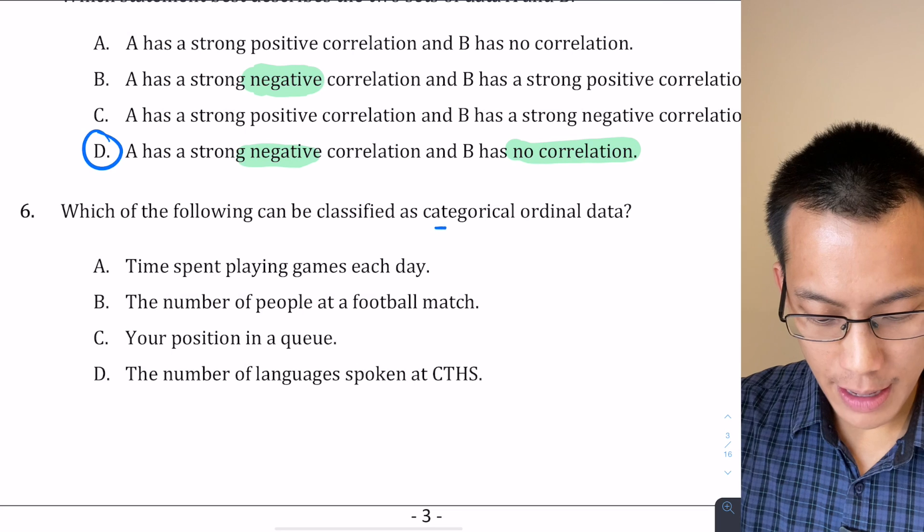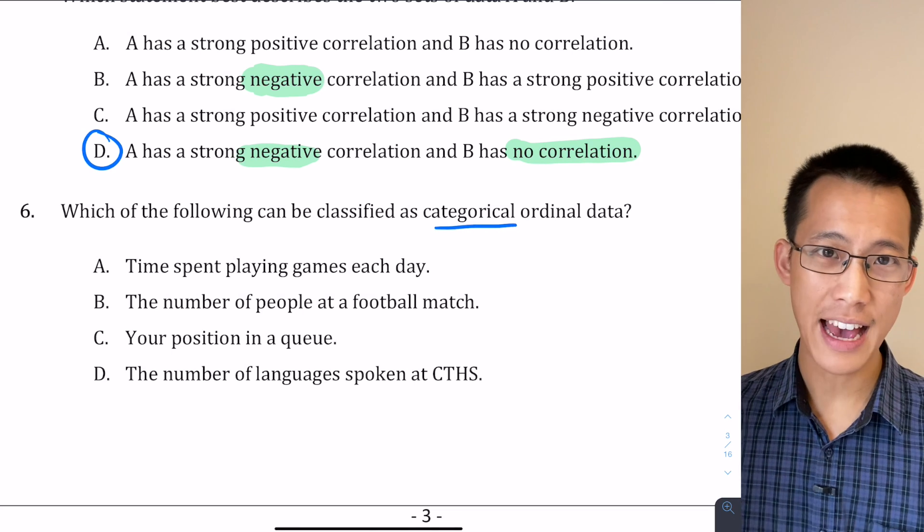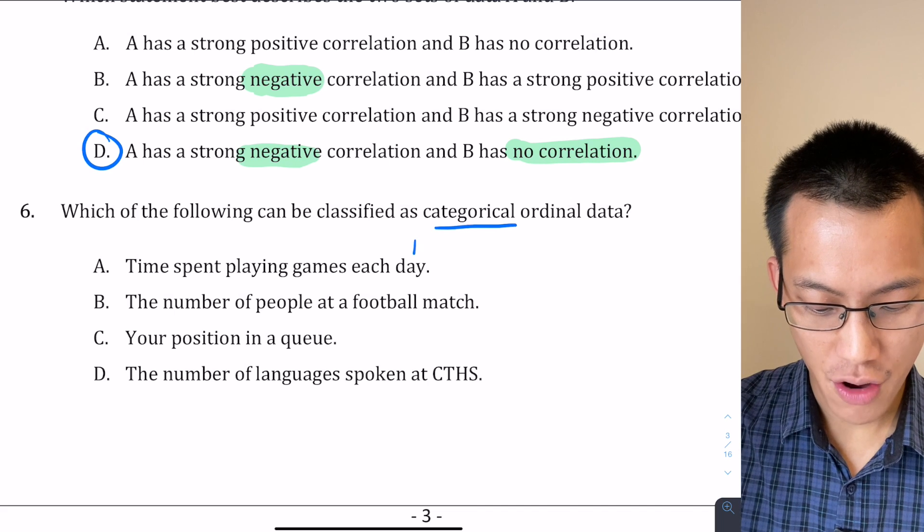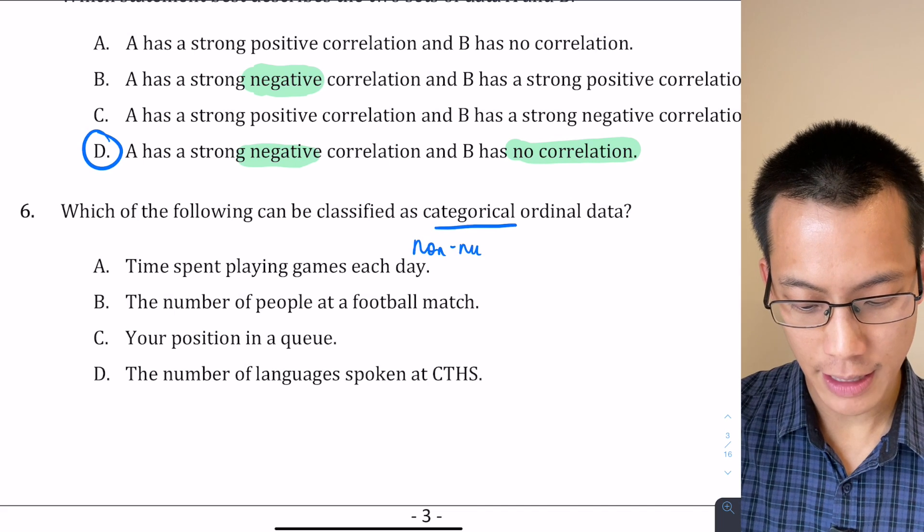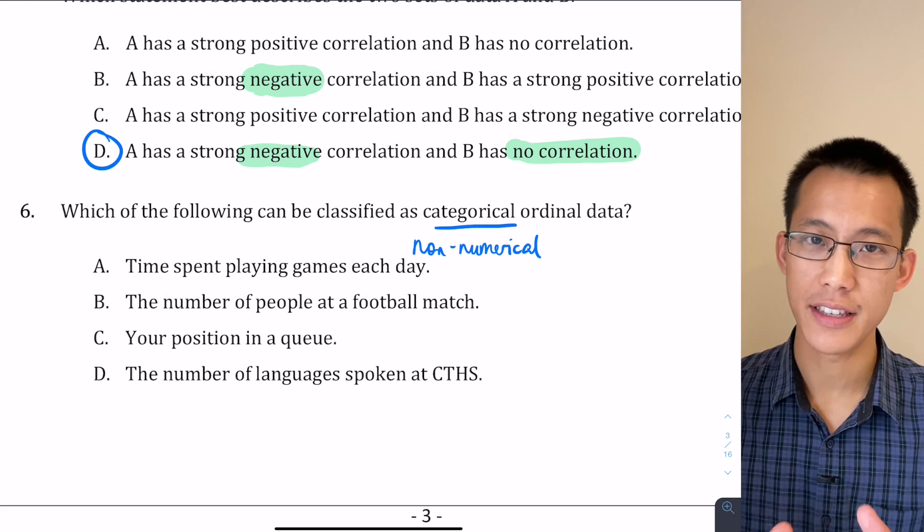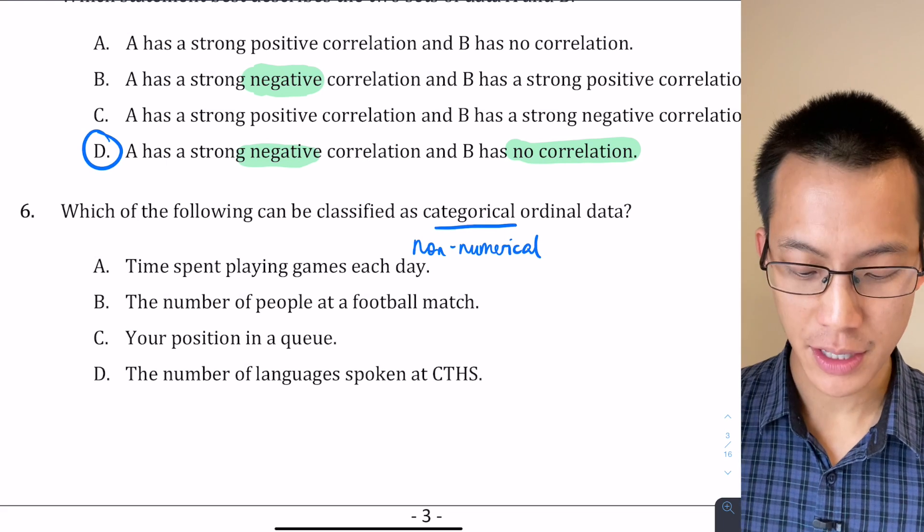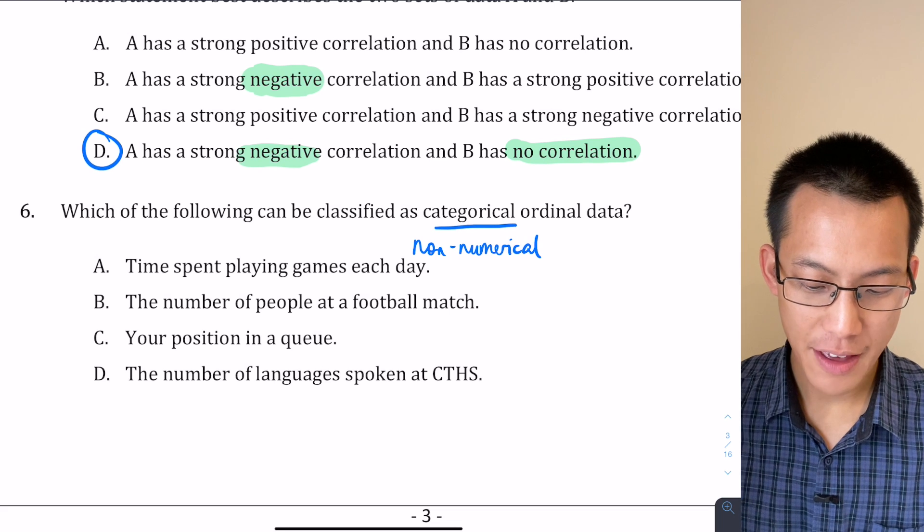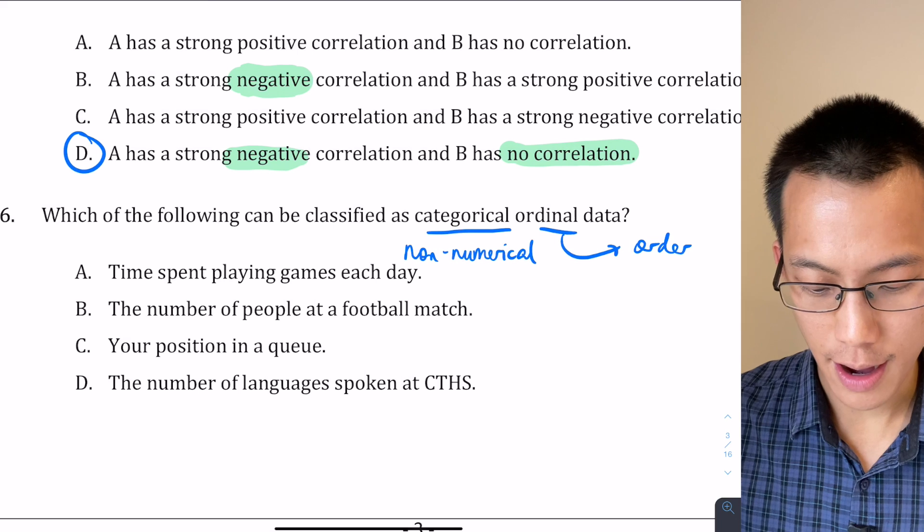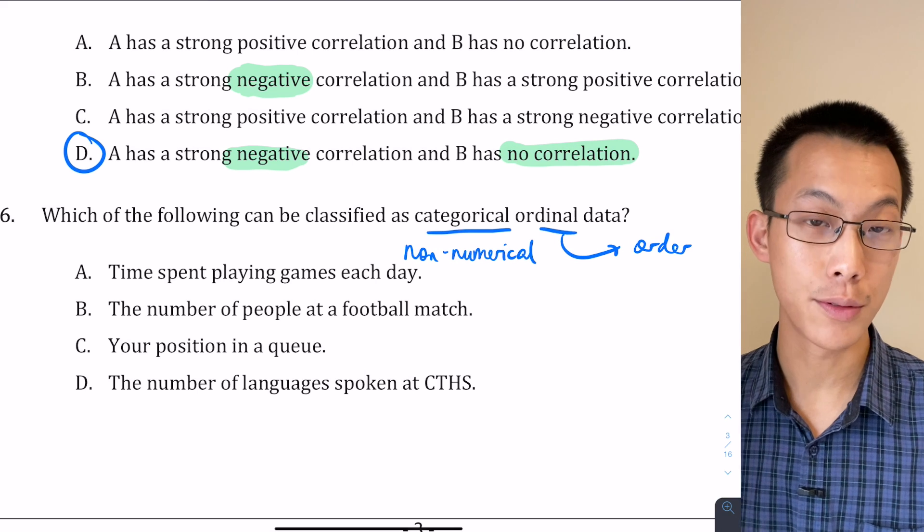So categorical, you might need to remember, it's something that has to do with—it's not numerical like one, two, three, four, five, so it's non-numerical. You might hear this called categories. And then when I say ordinal, what that means is, as the name suggests, you can put those different categories in some sensible order.